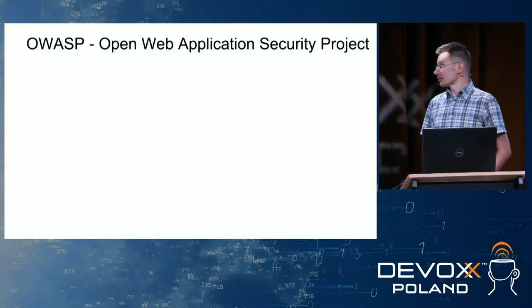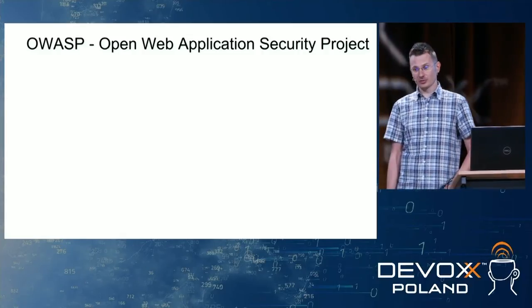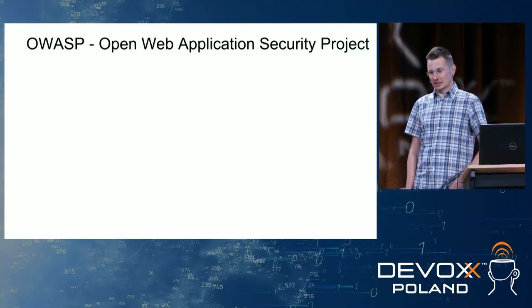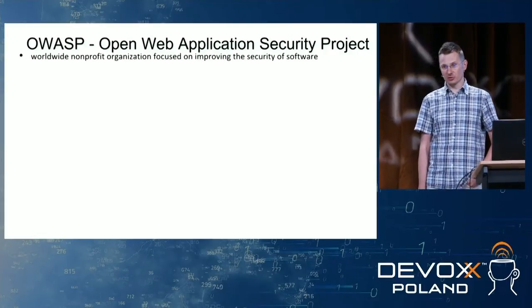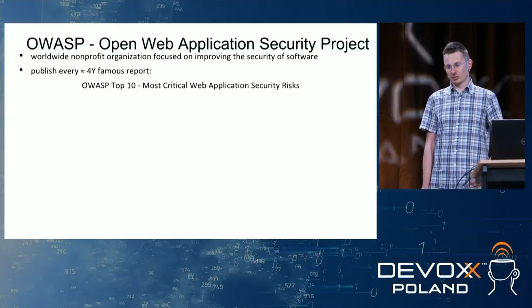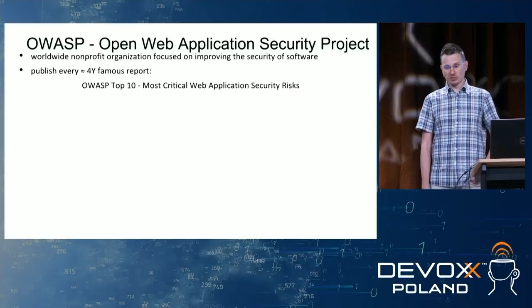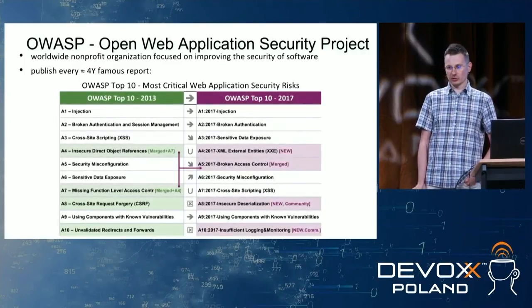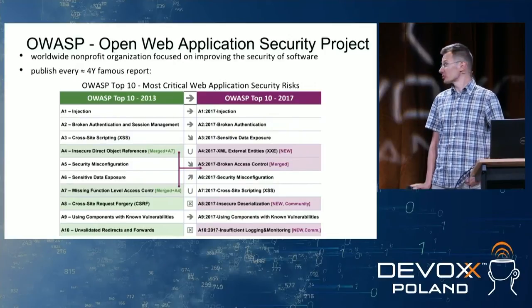Some of you may guess that the title of this presentation refers to the OWASP Top 10 report. Just a reminder: OWASP is a non-profit organization focusing on improving security, mostly famous for the OWASP Top 10 report — most critical web application security risks — which is published every four years. We are doing a new report end of this year, but the current report is still from 2017.